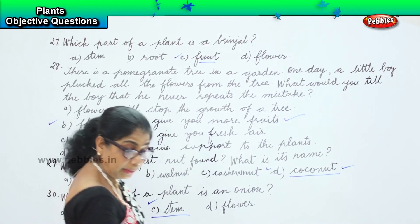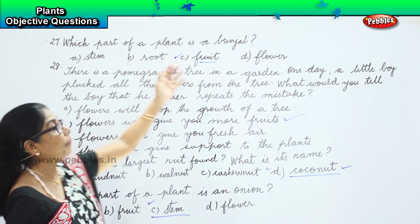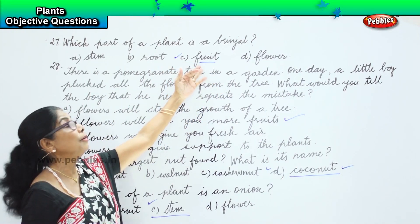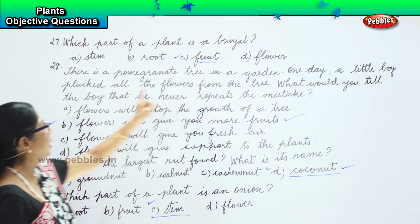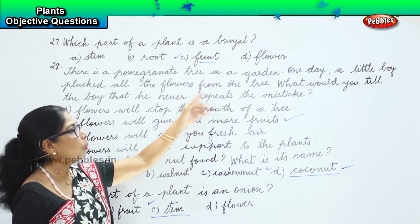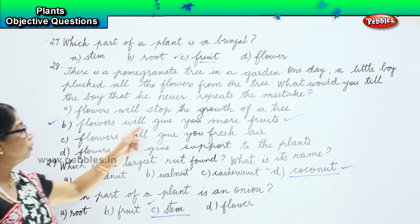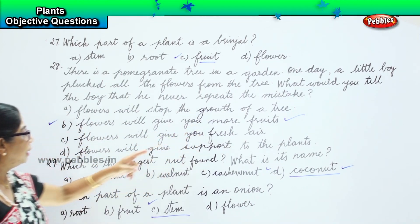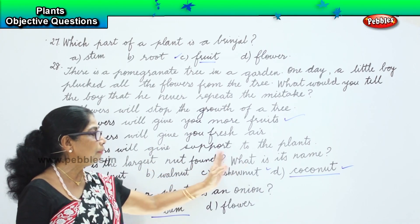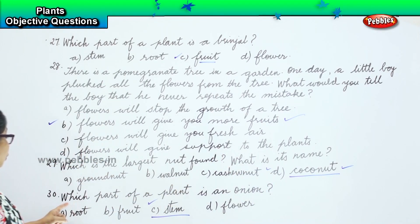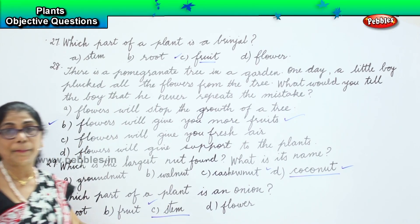Now let's look at all the answers. Twenty-seventh: which part of a plant is brinjal? Brinjal is a fruit. Twenty-eighth: there's a pomegranate tree in the garden, a little boy plucked all the flowers — I'll tell the boy that flowers will give you more fruit, so do not pluck flowers. Twenty-ninth: the largest nut is coconut. Thirtieth: which part of a plant is an onion? An onion is a stem — that's the stem of a plant.